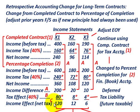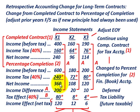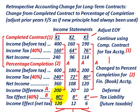The income effect net of tax is calculated by taking the income difference of $200,000 less the tax effect of $80,000, giving $120,000. You can verify this by comparing net income: $240,000 under the completed contract versus $360,000 under percentage of completion — a difference of $120,000. The process is: find the income difference, calculate the tax effect, and subtract to get the income effect net of tax.